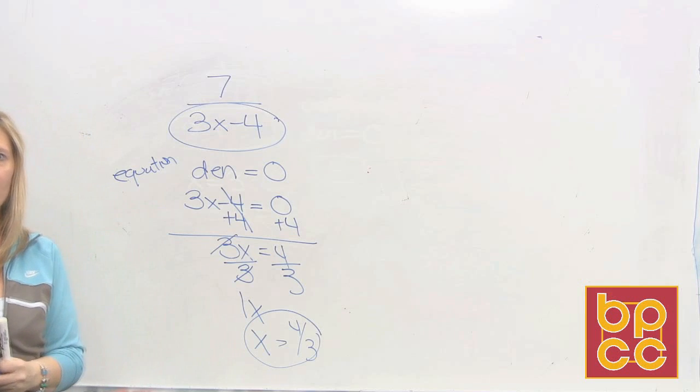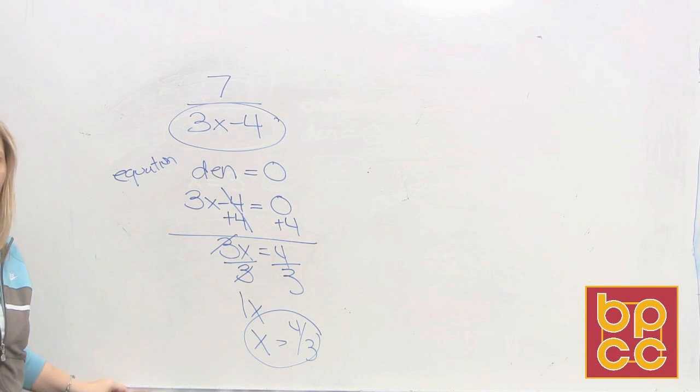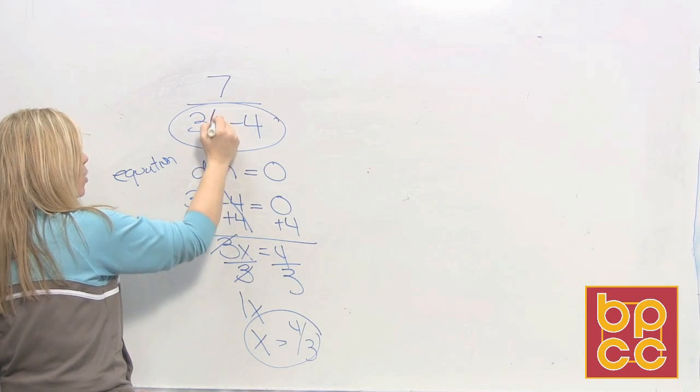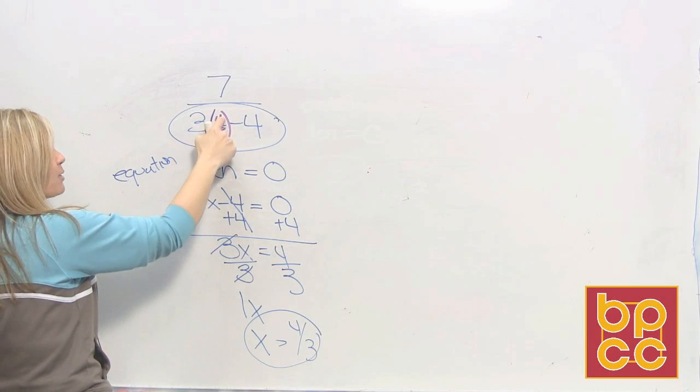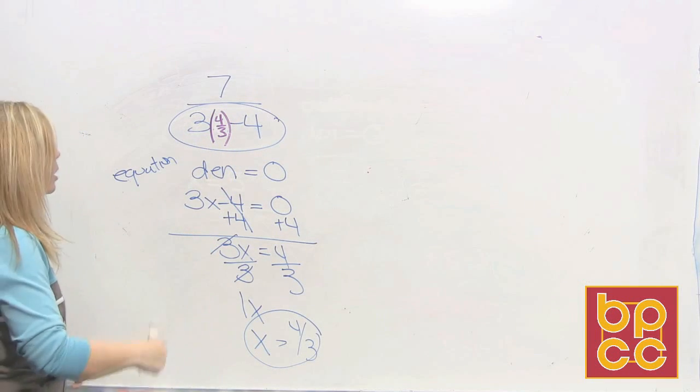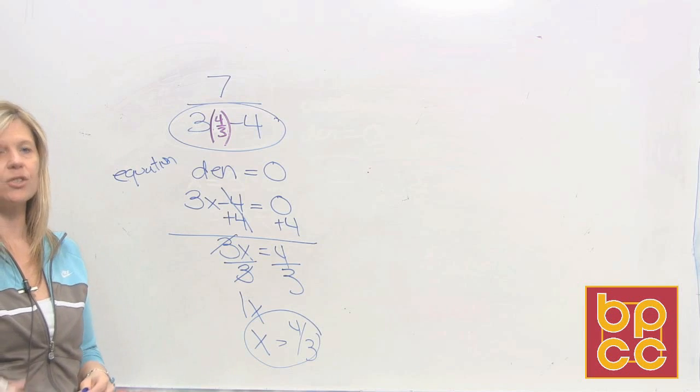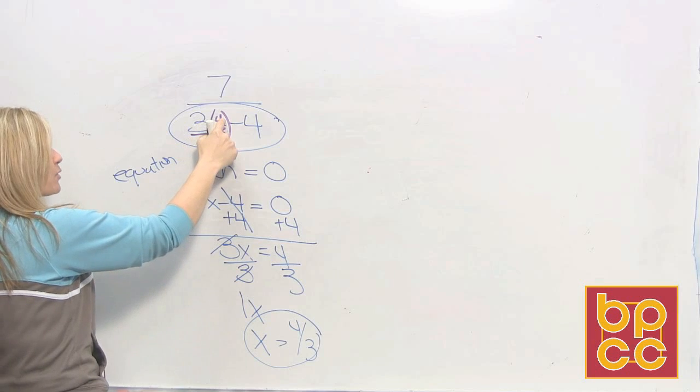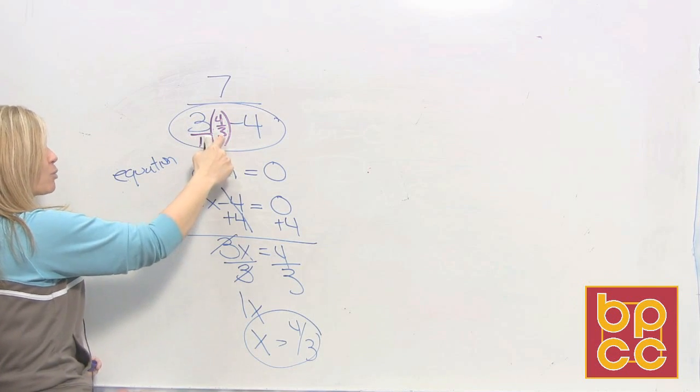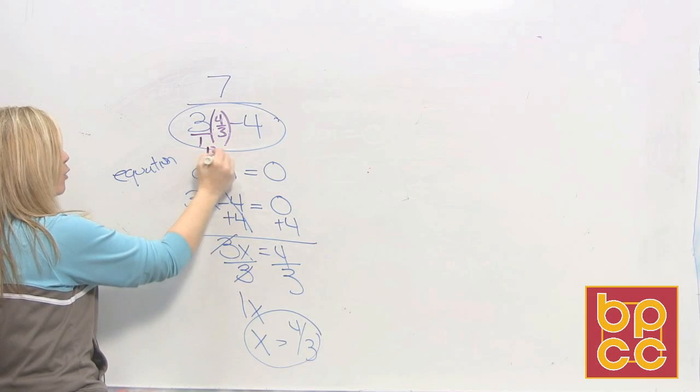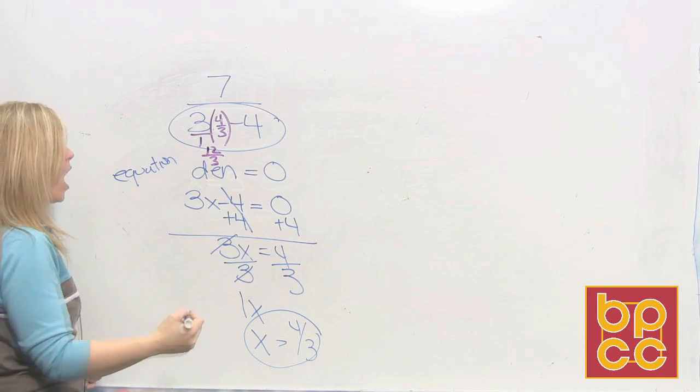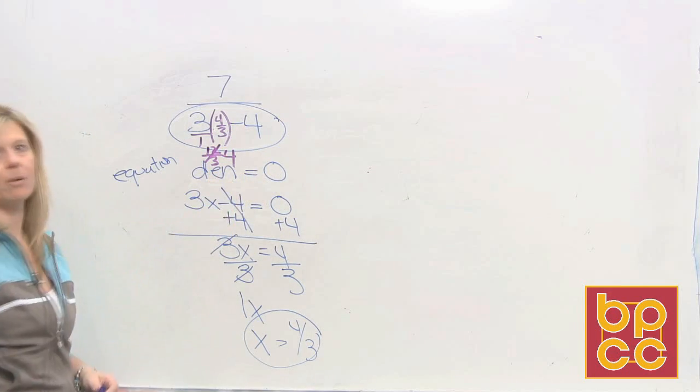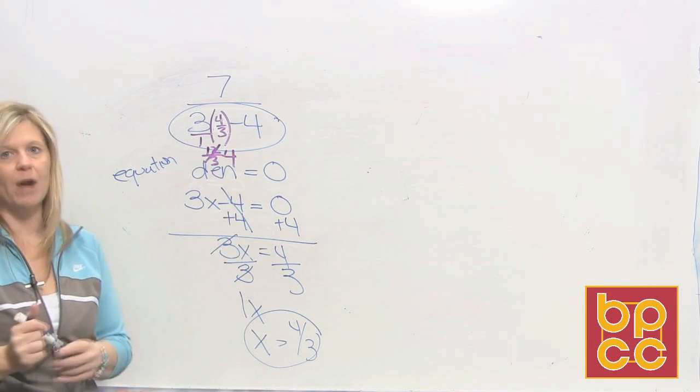This is the number that if we put in the spot for x would make our denominator zero. And if our denominator is zero, the fraction is called what? Undefined. I'll prove it to you. If I replace x with this four thirds. Three times four thirds. Well we've been doing this all semester. Multiplying fractions is no problem. Top times top, bottom times bottom. So three times four is twelve. Three times one is three. That'd be twelve over three. But what is twelve over three? Oh, it's four. And four minus four would make the zero. So that is the number that makes your fraction undefined.